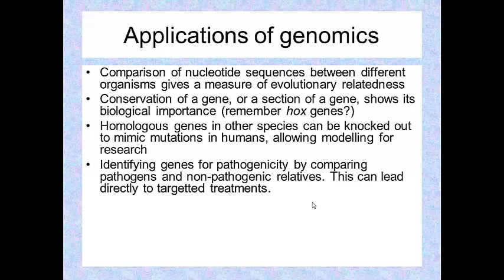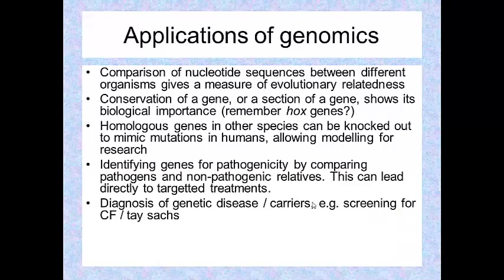You can identify genes for pathogenicity - that is, how pathogenic something is. By doing a comparison between pathogens and non-pathogenic relatives, you find out the genes they have in common and the genes they don't have in common. Maybe the genes they don't have in common are the ones which are pathogenic, the ones causing the harm, and so you can target your treatments and research appropriately.